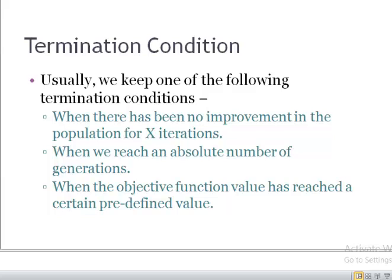Secondly, we may set a fixed number of generations, and when that number of generations is completed we stop the genetic algorithm. A third possibility is that we predefine a value of the objective function, and when that value is achieved we stop.